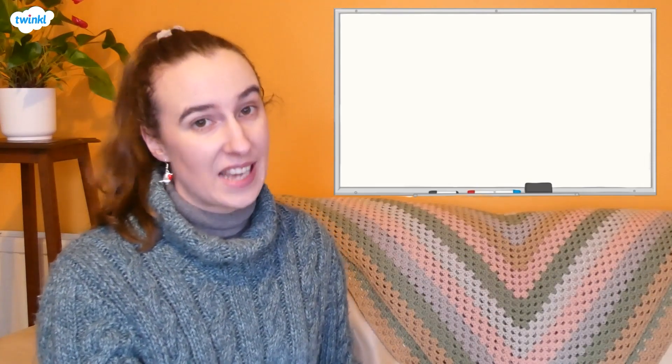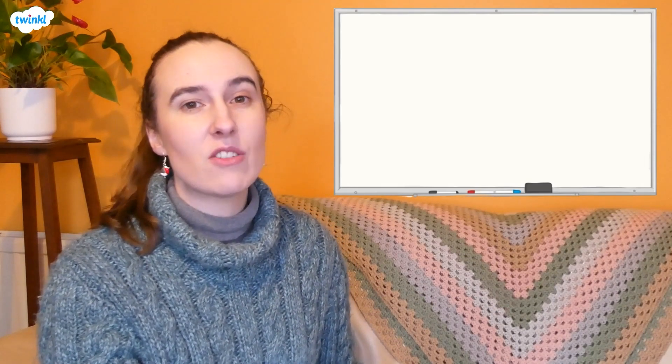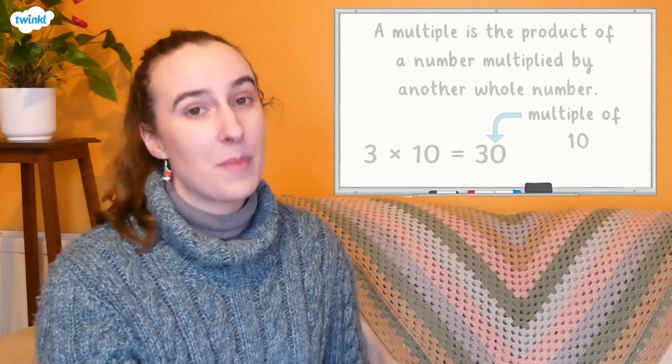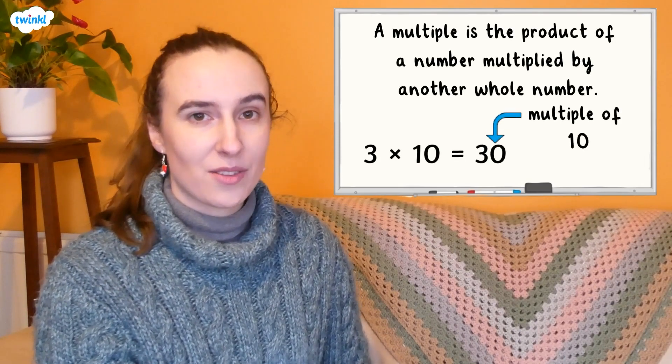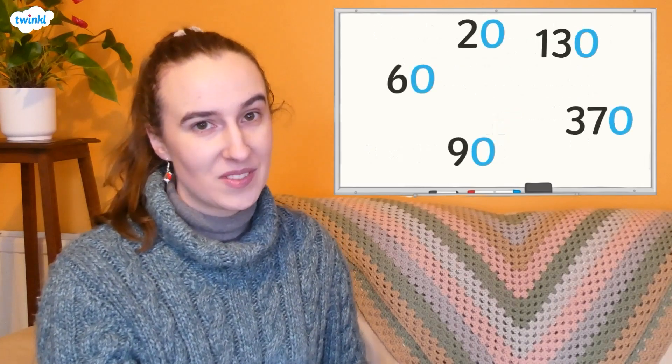When we round a number to the nearest 10, we are rounding it to the nearest multiple of 10. Remember, a multiple is a product of a number multiplied by another whole number. All multiples of 10 have a zero in the ones column.